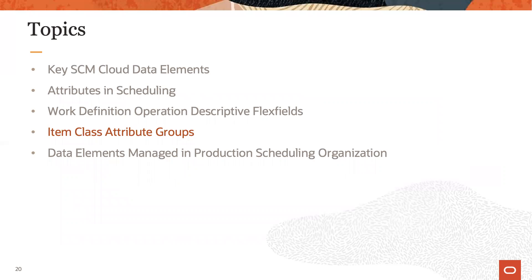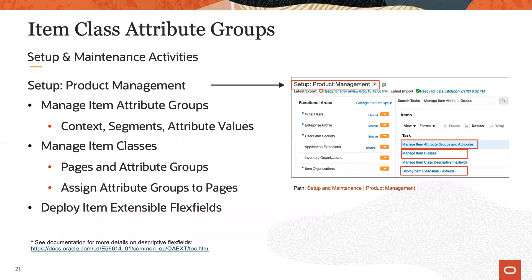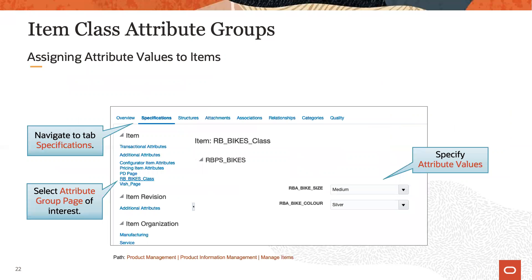Next, we will review the core setup steps for extensible flex fields for items. Again, navigate to the setup and maintenance work area. Now select setup product management in the context switcher LOV and search for manage item attribute groups. Then complete the following tasks: manage item attribute groups and attributes, manage item classes, and deploy item extensible flex fields. Once the extensible flex field is defined and deployed, the underlying attributes can be maintained on each item of the respective item class to which the attribute group was assigned.